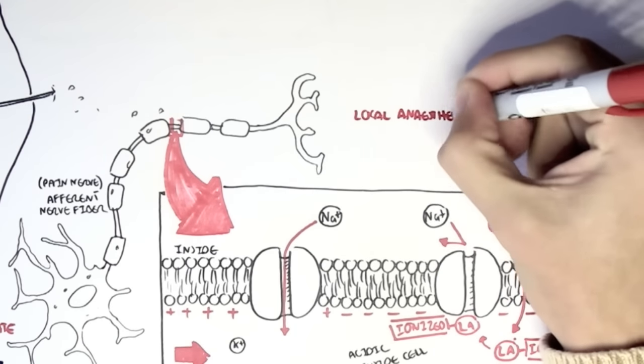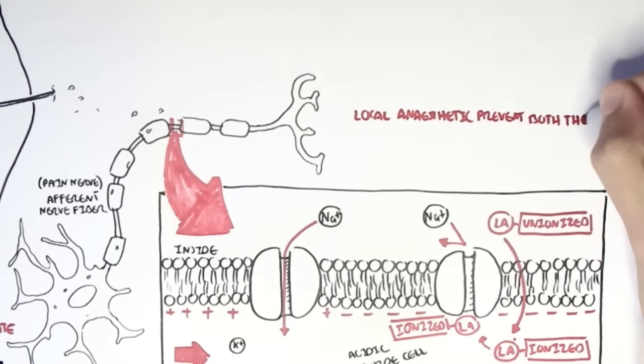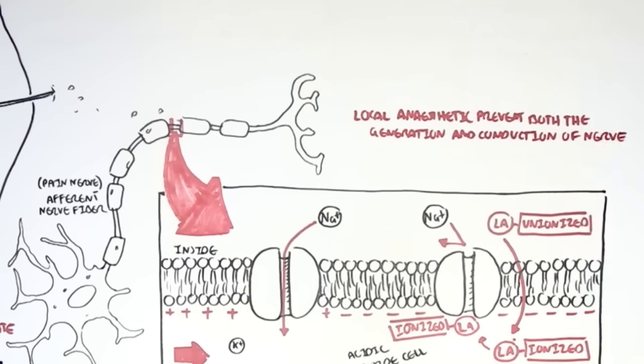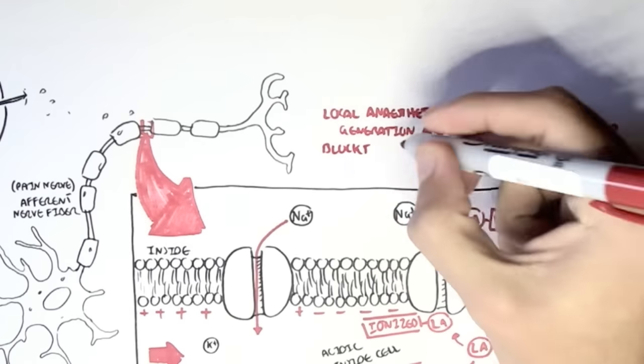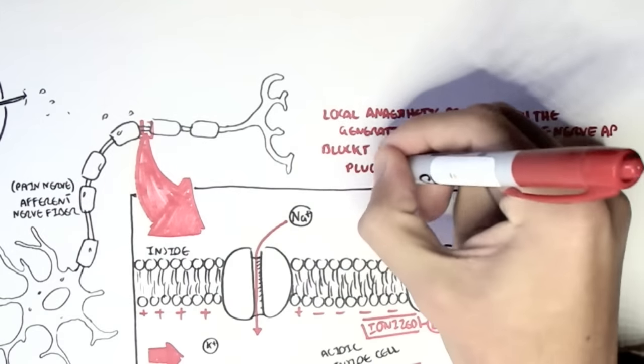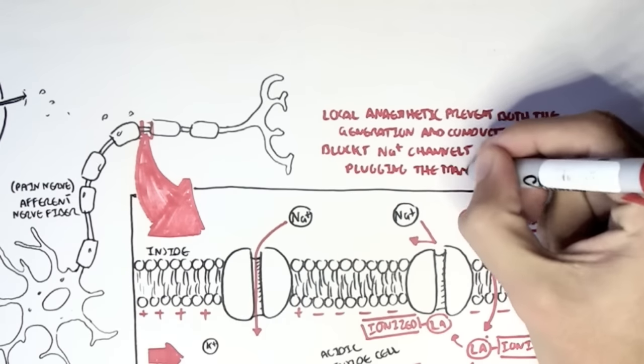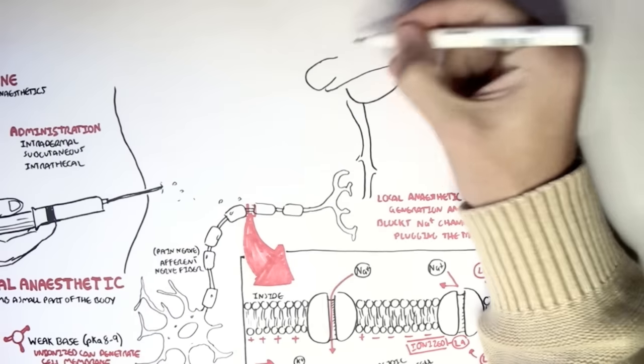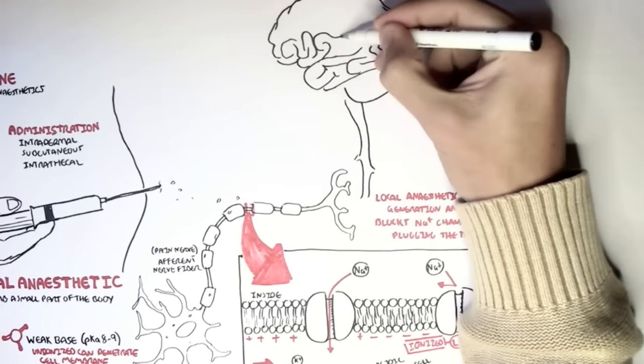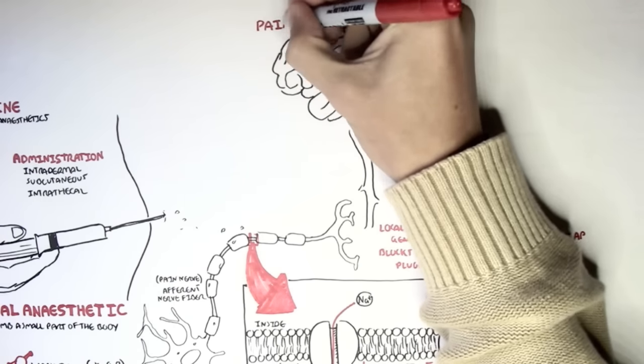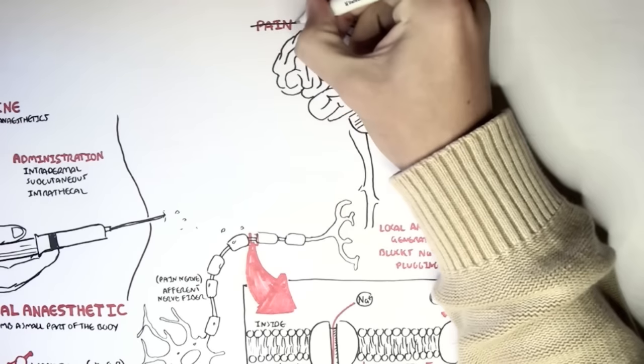So in summary, a local anesthetic essentially prevents both the generation and conduction of the nerve action potential. It blocks the sodium channels by physically plugging the transmembrane pore from the inside. And so when we prevent the conduction of this action potential from this pain fiber, that means that the brain will not receive this pain signal. And so we would feel no pain when we use local anesthetics.